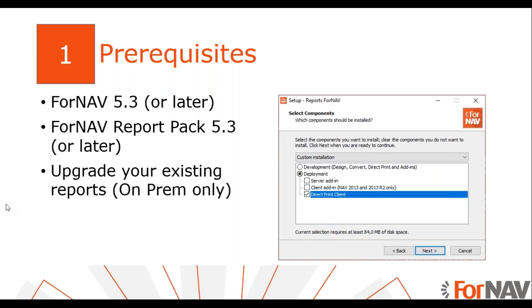I will print Business Central reports directly in the Business Central Cloud environment. The minimum requirements for direct print are Fornav report pack 5.3 or later. You need to install the Fornav direct print extension. And for on-premise, you must upgrade all the reports to Fornav 5.3 or later.